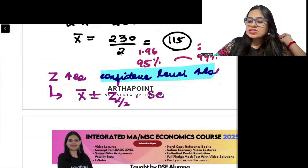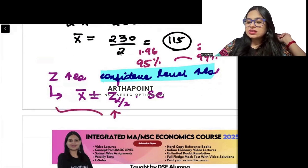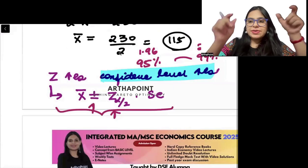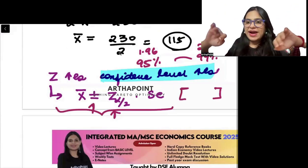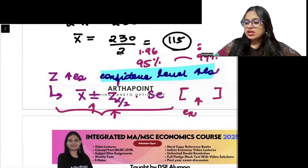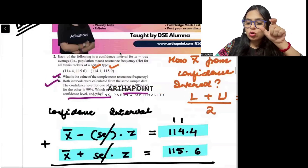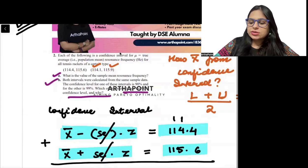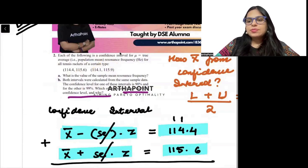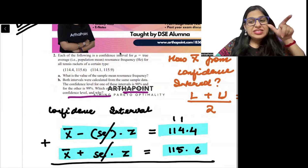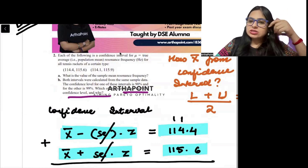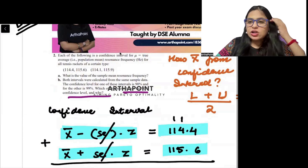So as the value of z increases, what you are adding and subtracting increases. So the confidence interval expands. The confidence interval expands. So we can say that wherever confidence interval is lower, chota confidence interval, it's smaller. Wherever confidence interval is smaller, that is representative of z 90%. And wherever the width is more, it is representative of a higher value of z. It is representative of a higher value of z.